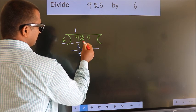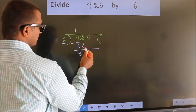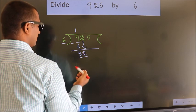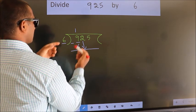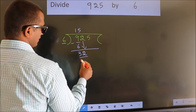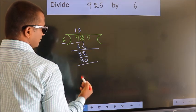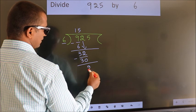After this, bring down the beside number. So 2 down. So 32. A number close to 32 in the 6 table is 6 fives 30. Now we subtract. We get 2.